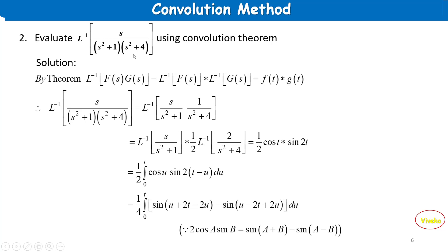Problem 2: Evaluate L⁻¹{ s / [(s²+1)(s²+4)] } using the convolution theorem. Solution: Using the formula L⁻¹{F(s)·G(s)} = f(t) * g(t).